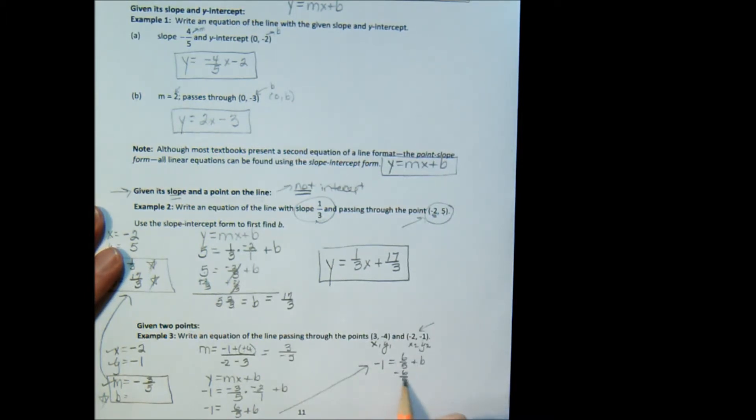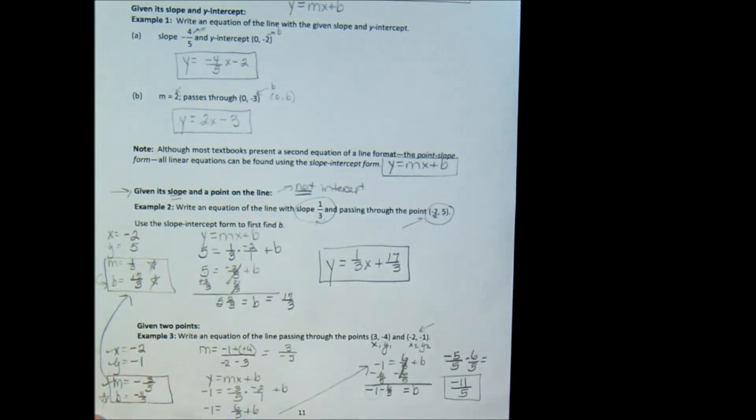We're going to subtract 6 fifths from both sides. And I'm going to get b is equal to negative 1 minus 6 fifths. Now how do you combine that into a fraction? Well I have to find a common denominator, which is 5. So it's going to be negative 5 fifths minus 6 fifths. Because negative 5 fifths is the same as negative 1. So that gives me negative 11 fifths as my b. So negative 11 fifths.